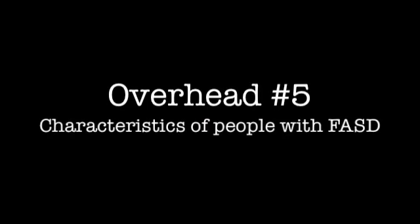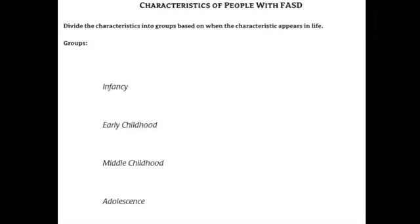In small groups of three to four students, have students sort the characteristics of fetal alcohol spectrum disorder into the proper groups based on when the characteristic first appears in the life of a person with fetal alcohol syndrome. Some examples of categories are: infancy, early childhood, middle childhood, adolescence, adult, any time in life, or non-characteristic of fetal alcohol syndrome.